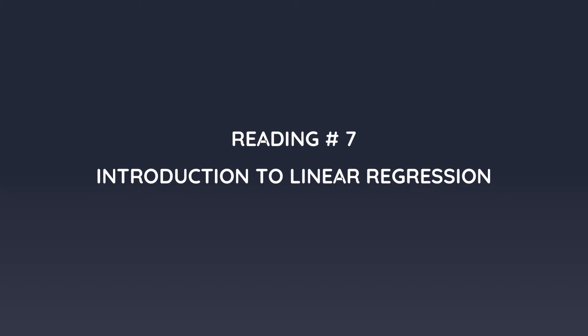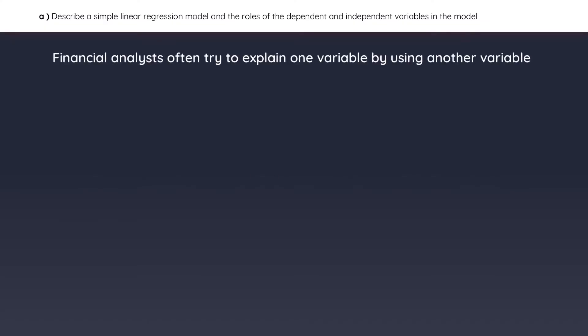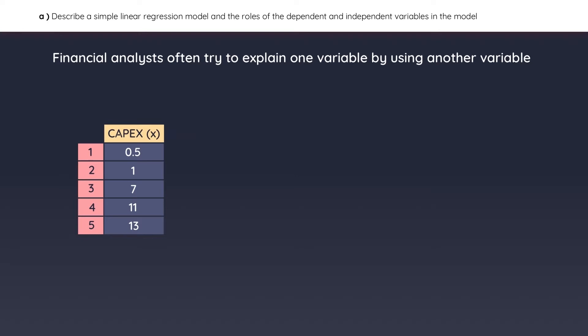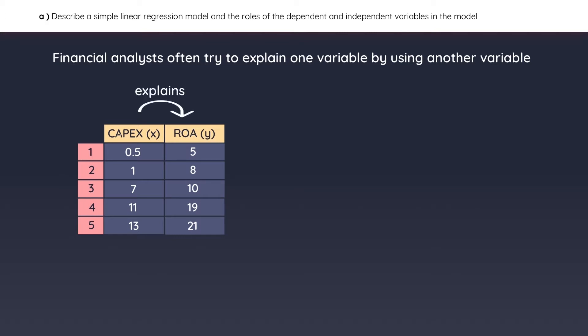In this next reading, we will cover simple linear regression. Financial analysts often try to explain one variable by using another variable. For example, assume that these are the capital expenditures for five companies, and these are the return on assets for those same companies. A financial analyst believes that CAPEX can be used to explain the value for the return on assets. This makes CAPEX the independent variable, or X value, and the return on assets the dependent variable, or Y value.